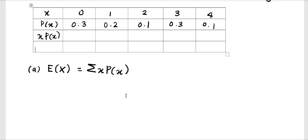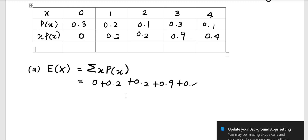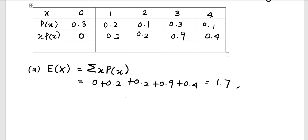So: zero times 0.3 gives zero; one times 0.2 gives 0.2; two times 0.3 gives 0.6; three times 0.3 gives 0.9; and four times 0.1 gives 0.4. The summation is 0 + 0.2 + 0.6 + 0.9 + 0.4, which equals 1.7.